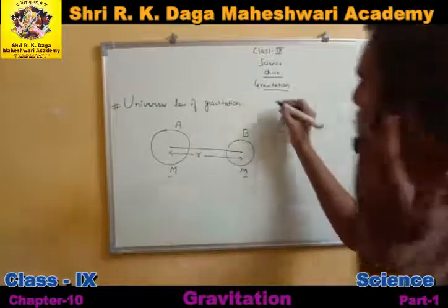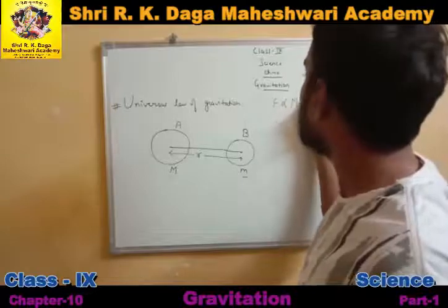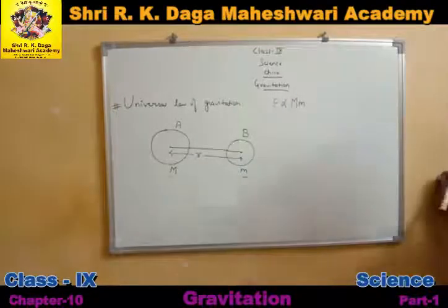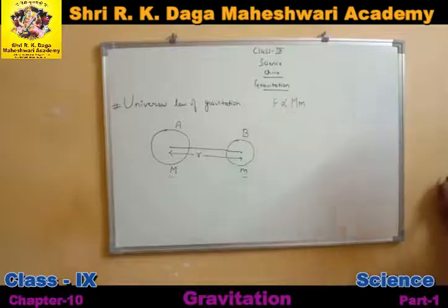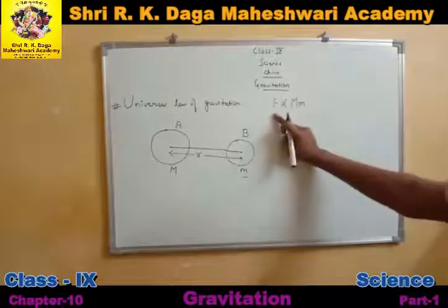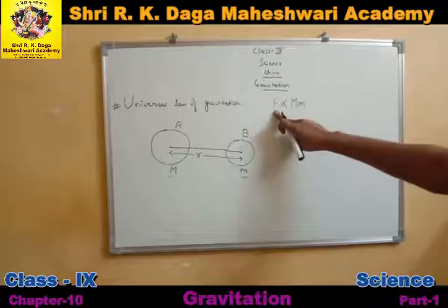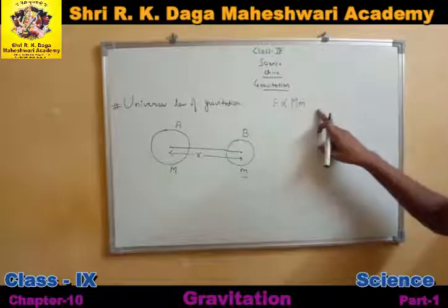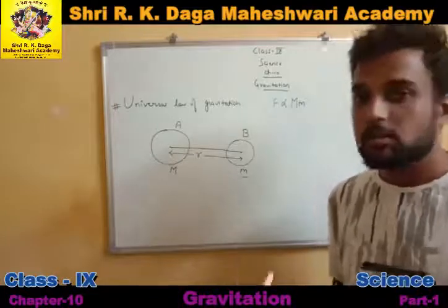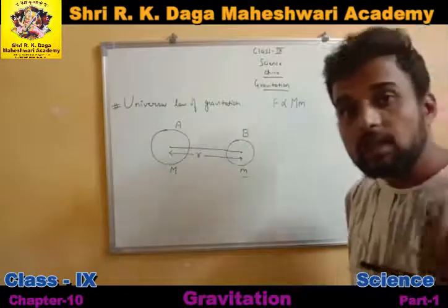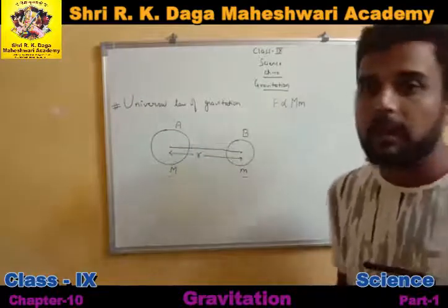Newton stated: first, the force between two bodies is directly proportional to the product of the masses of both bodies. If the product of their masses is greater, the force is greater; if the masses are less, the force is less. This means the greater a body's mass, the greater its gravitational force — which is why Earth, having a very large mass, exerts a very strong force on us, keeping us bound to it.